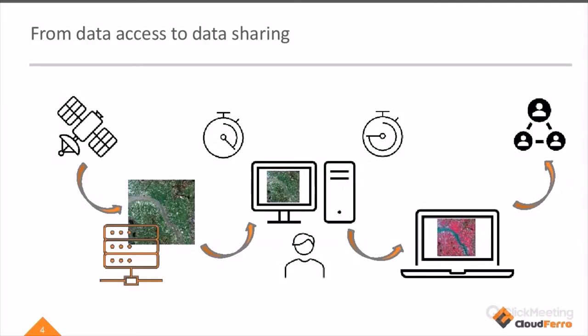The data are received by ground stations, stored there, and then published on servers and data hubs. The user then comes to that data hub, takes the data to their computer, processes it on their computer, and then shares it with colleagues. So it's a really time-consuming process — it's not in one integrated environment, but completely spread across different stages and different levels.